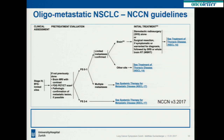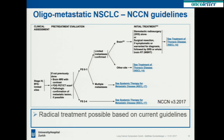Going beyond guidelines — we actually performed a guideline-conformed treatment. Looking at the NCCN guidelines from 2017, it states that if a patient has limited metastatic disease, we can offer induction chemotherapy. If the patient does not progress, we can add local treatment and try a curative approach. This is already stated in current guidelines — interestingly, without really proper evidence. So what is the data behind such an approach?